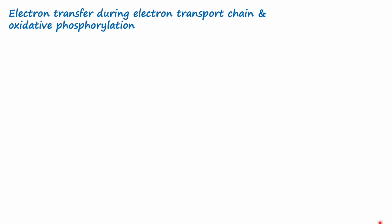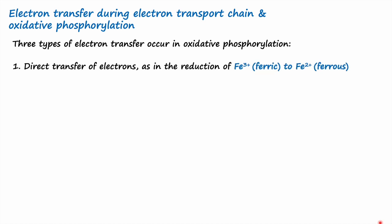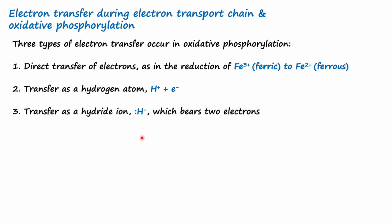When we learn about the electron transport chain, it is important to know how electrons are carried through it. There are three types of electron transfer in oxidative phosphorylation: first, a direct transfer of electrons in the form of reduction of ferric ion to ferrous ion; second, transfer as a hydrogen atom, which carries one proton and one electron; and third, transfer as a hydride ion, which bears two electrons.